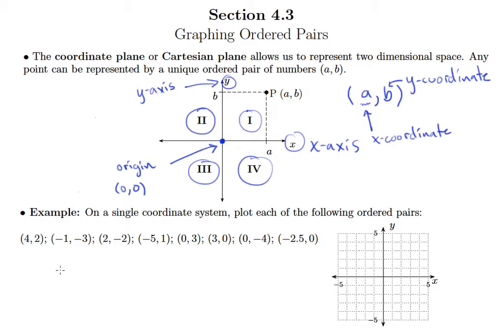Let's do an example where we plot lots of points. We'll start with (4, 2). From the origin, I go 1, 2, 3, 4 along the x-axis, and then up 2 in the y-direction. So there's the point (4, 2).